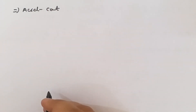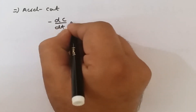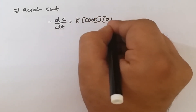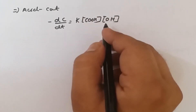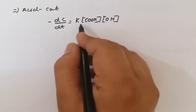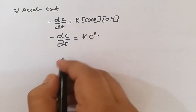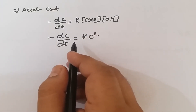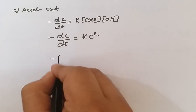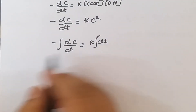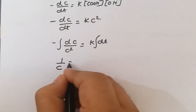Now for acid-catalyzed polycondensation: again considering polyesterification of a diacid and a diol, the rate with a catalyst is first order in acid and first order in diol. With equimolar amounts, –dc/dt = k·c². Integrating: ∫–dc/c² = ∫k dt gives 1/c = kt + constant.